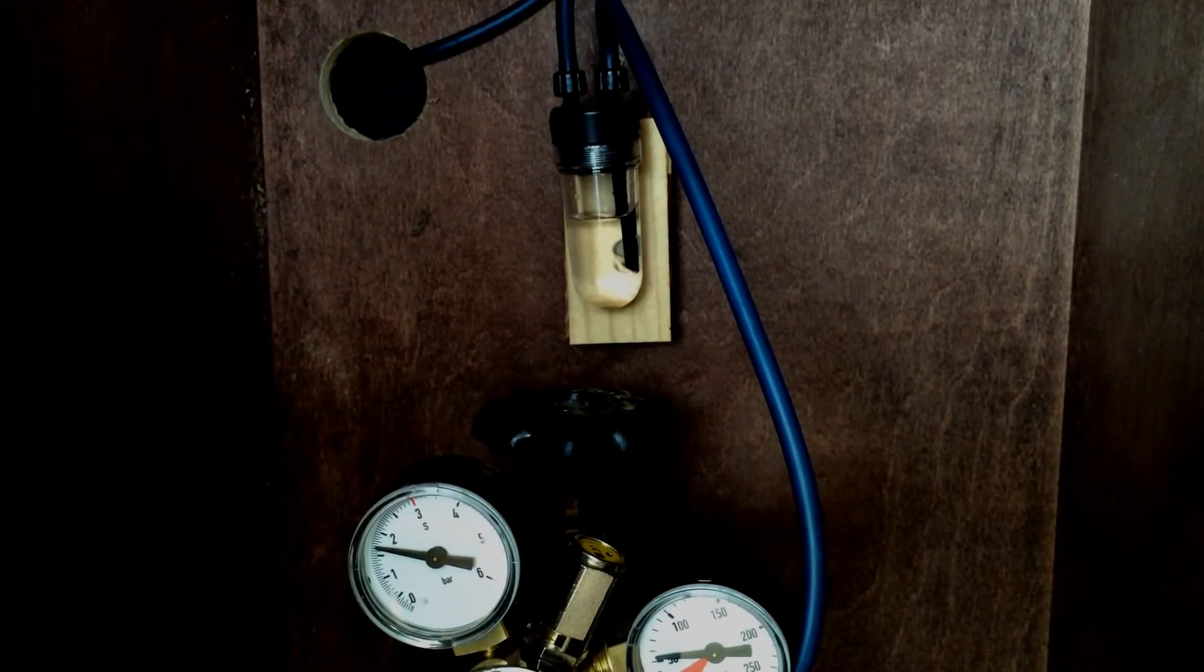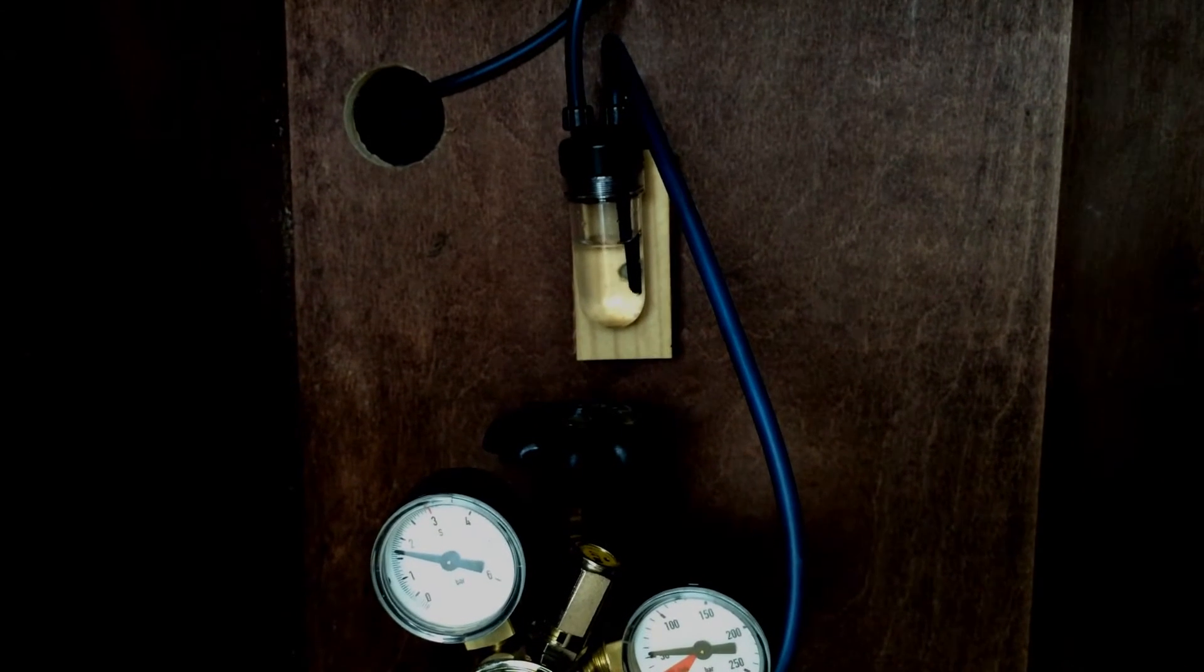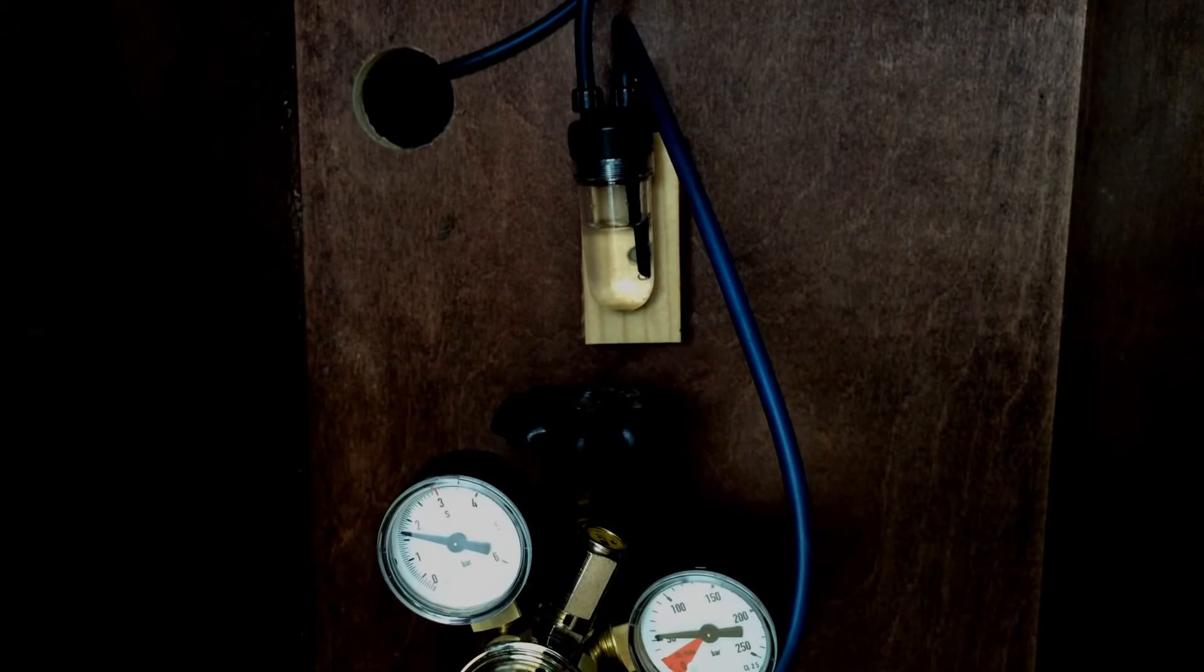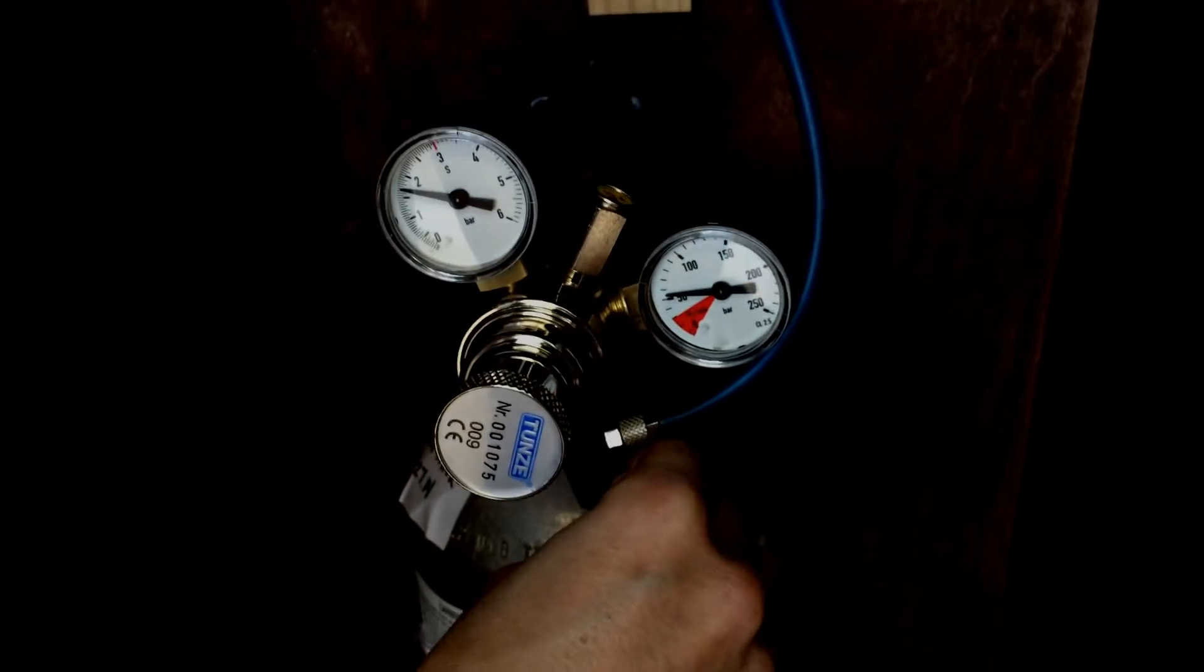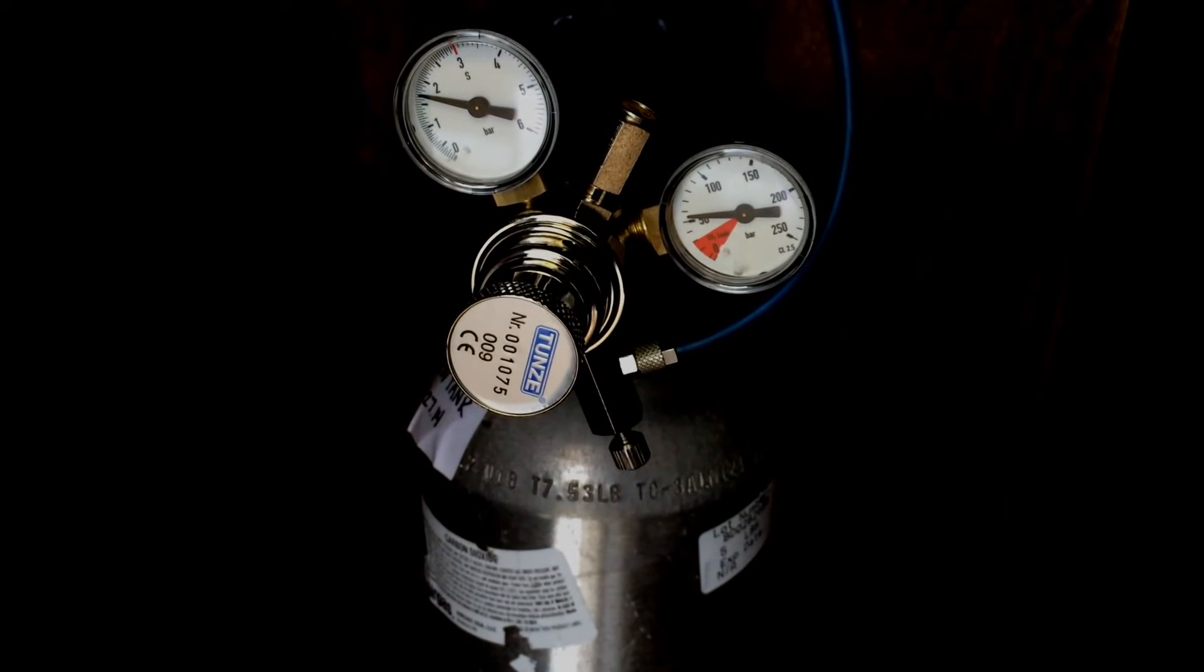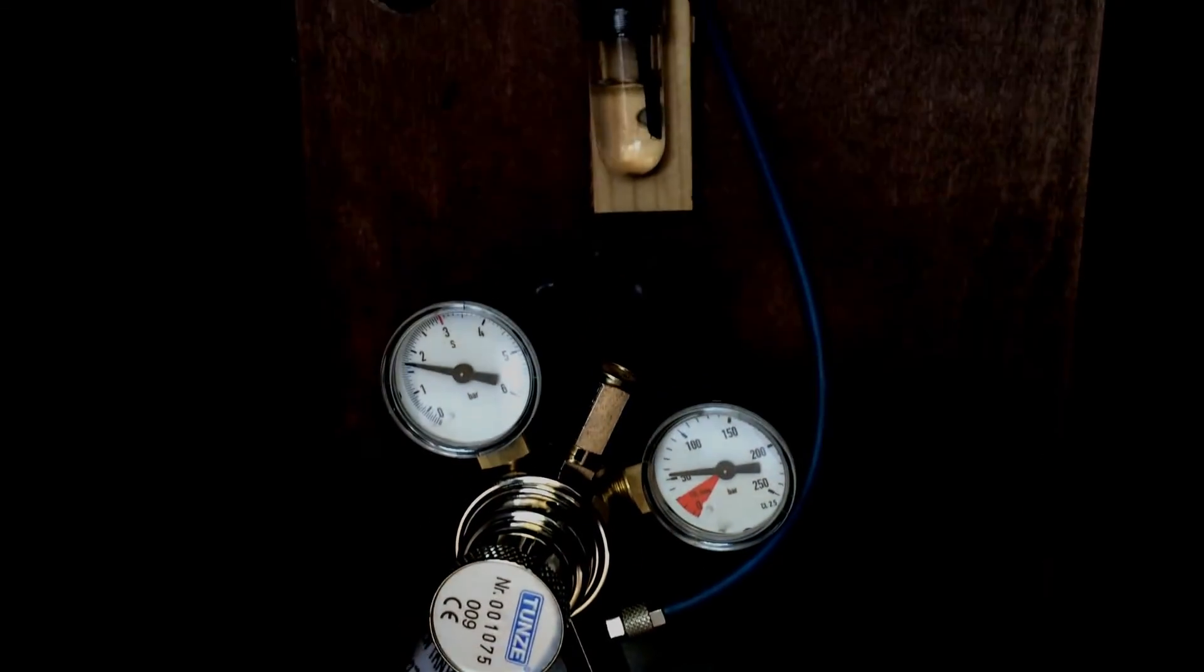For a tank that's been set up, your goal would probably be somewhere between one and three bubbles per second, depending on how much CO2 your plants are requiring. This is where we have our CO2 display plant tank. This is a pretty steady drip and this is pretty normal.